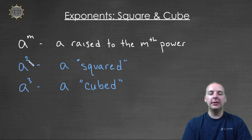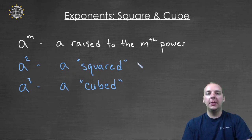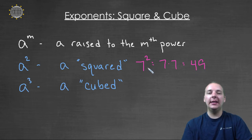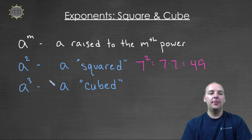So A raised to the second power is read as A squared. For example, if you have seven raised to the second power, which is seven times seven, which equals forty-nine, we would say that forty-nine is seven squared.